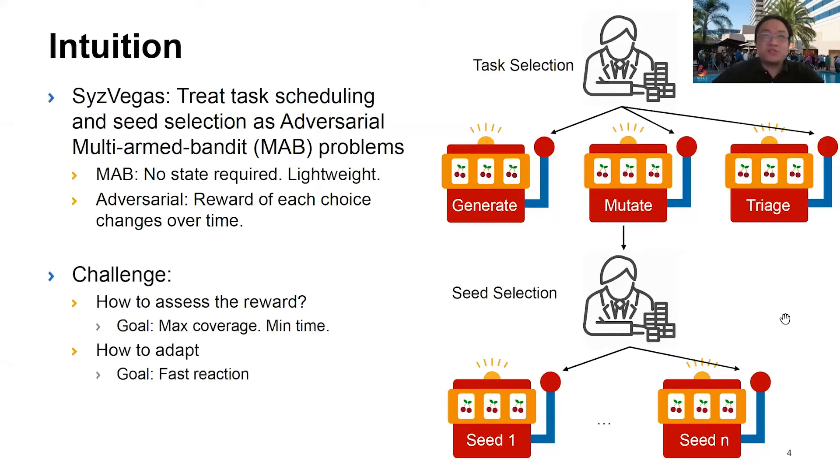There are two challenges. First, how to assess the reward? We want to guide the MAB algorithm towards optimizing coverage reached per unit time. Second, how to adapt. We want AMAB to recognize the change in each task's rewards and adapt its strategy accordingly.